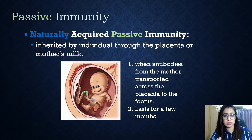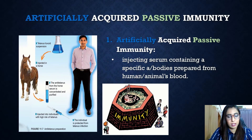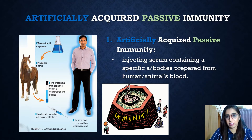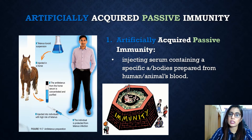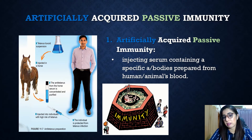Artificially acquired passive immunity is different from artificially acquired active immunity. With the vaccine — active immunity — it is long-term. For artificially acquired passive immunity, it is short-term. It is acquired through anti-serum injection and cannot last a long time because the foreign antibodies, when they break down in the body, are not being replaced.